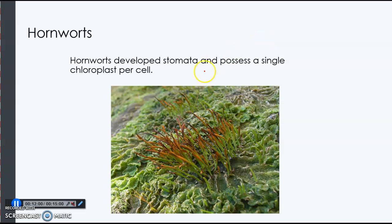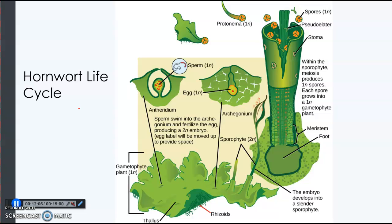Hornworts look like this. The life cycle shows the gametophyte, which is a leafy structure, and then the sporophyte is a slender stalk — very similar to the sporophyte in a moss.